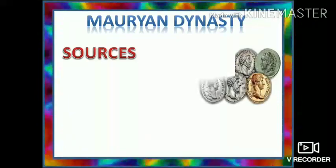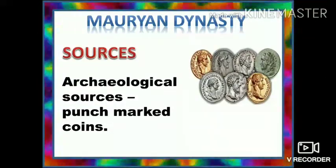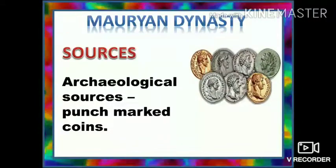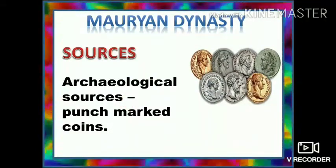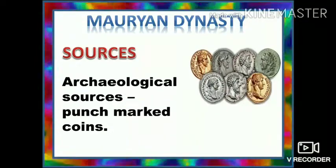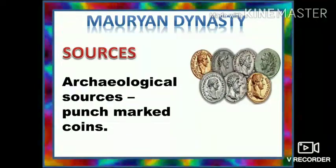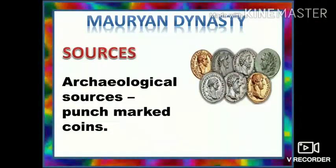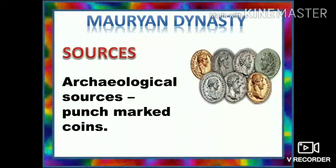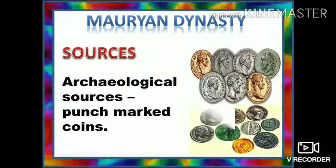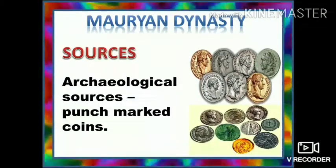Now let's see the sources of Mauryan dynasty. Two sources of Mauryan Empire are archaeological sources and literary sources. Under archaeological sources, the materials remain such as silver and copper punch marked coins, which throw light on the Maurya period.